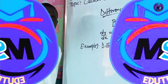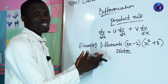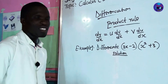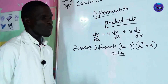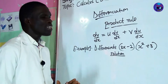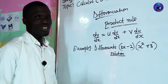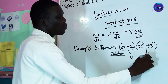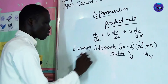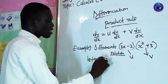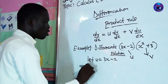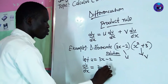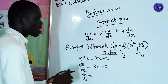Let me give you an example of where to apply product rule. Differentiate (3x minus 2)(x squared plus 3). You cannot apply the general rule to this type of question, so we need to apply product rule. Let u be 3x minus 2. Then du/dx, applying the general equation, gives us 3 times 1 equals 3. So du/dx equals 3.